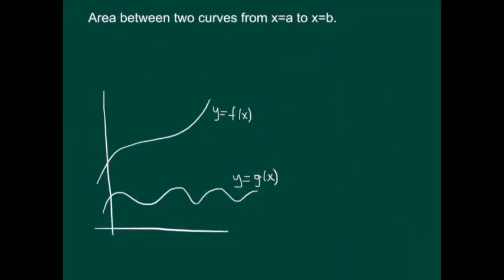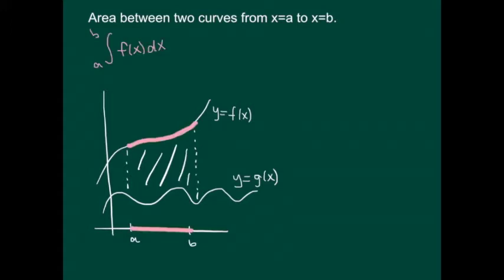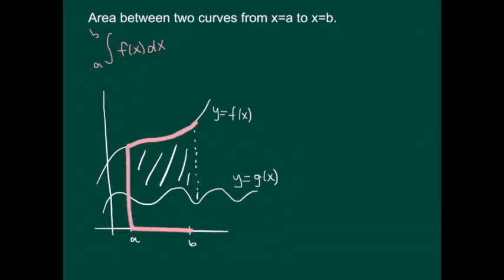In order to find the area between two functions from x equals a to x equals b, let's remember what the definite integral means. If I take the definite integral of function f between x equals a and x equals b, that gives me the signed area between the function and the x-axis. So that integral gives me the total signed area inside this region.